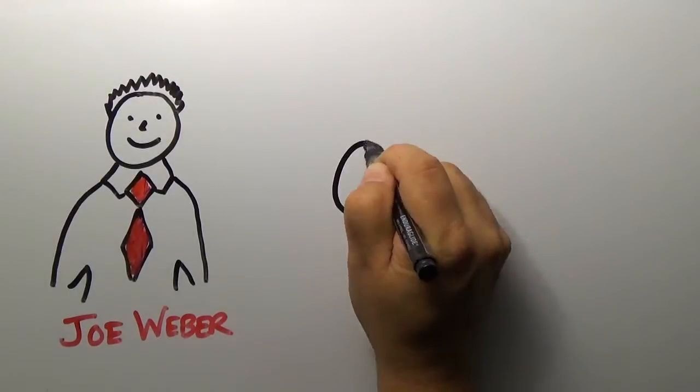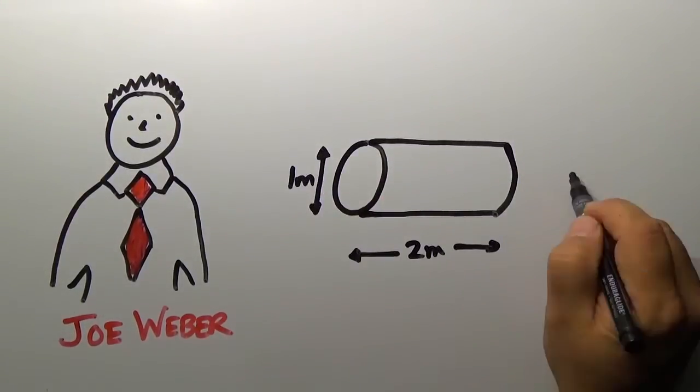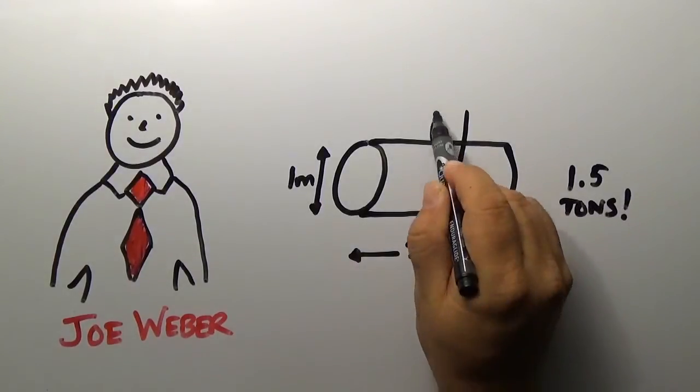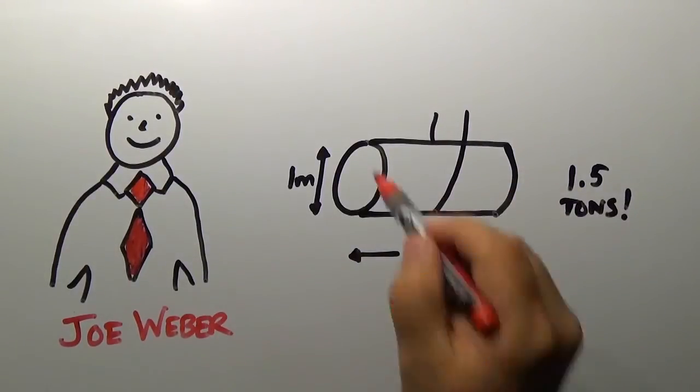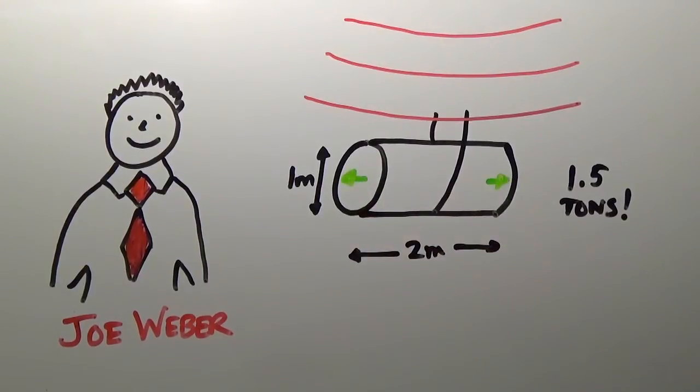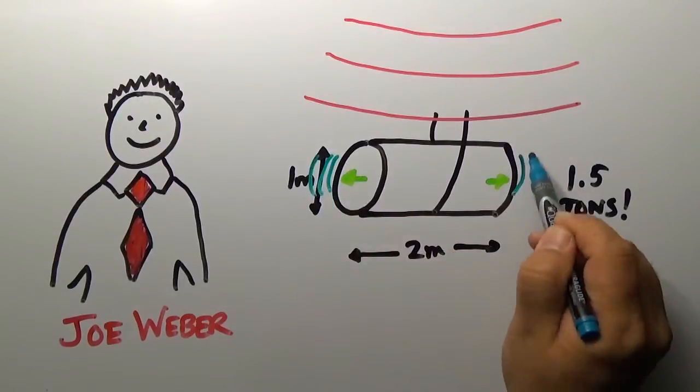He used a 1.5-ton cylinder of aluminum, suspended on a wire around its midpoint. If a gravitational wave passed through the bar, it would stretch it. The forces between the aluminum atoms would pull it back to its original shape, and it would faintly ring as if you tapped it with a tiny hammer.